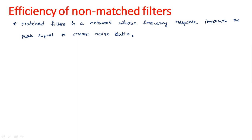A matched filter is a network placed in the receiver that improves the peak signal-to-mean noise ratio. The noise component added to the signal will be eliminated after passing through the matched filter — it selects only the required frequency band. This bandwidth is selected by the IF amplifier, which is chosen to be inversely proportional to the pulse width of the transmitted signal.